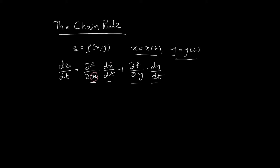One way to remember this: if you were to cancel the x's in (∂f/∂x)(dx/dt), you'd be left with df/dt. Similarly, canceling the y's gives df/dt. This is just a mnemonic to help remember how the chain rule works. Anyway, let's look at a quick example.